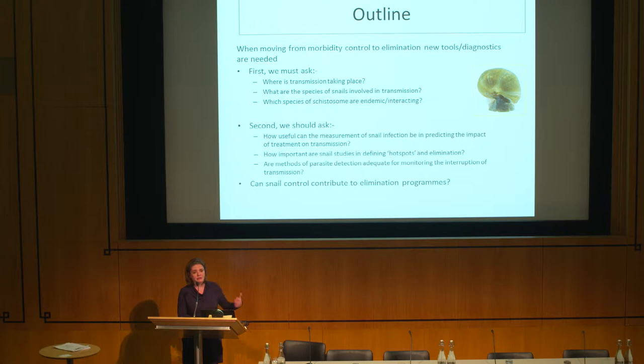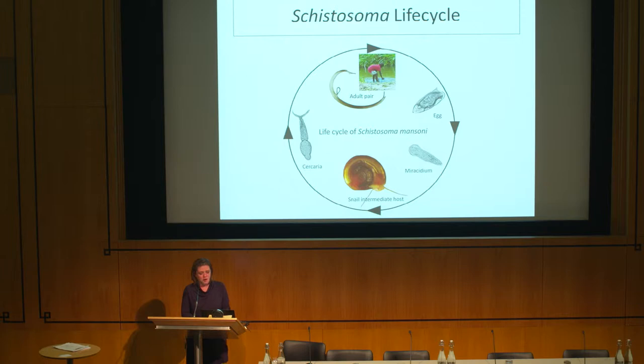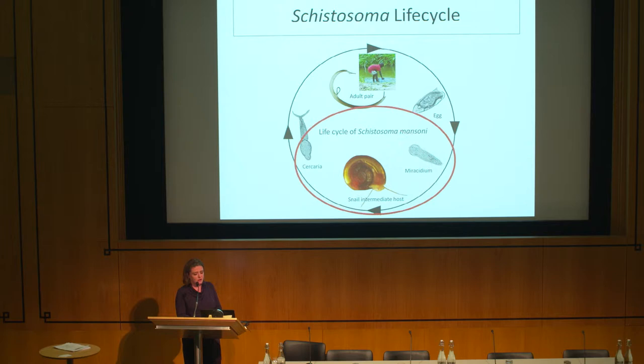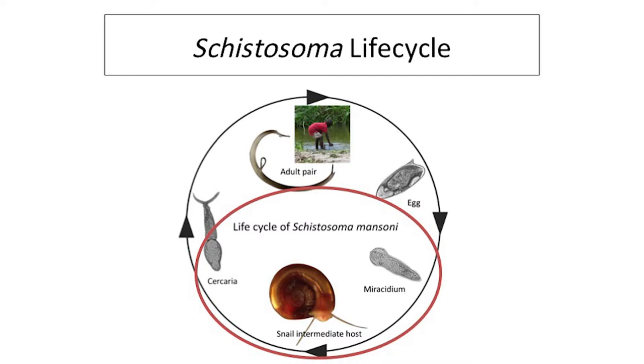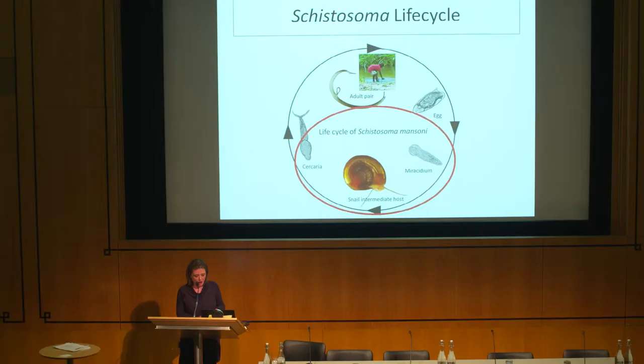To highlight the area of the life cycle I'm interested in: it's from the egg hatching — so miracidium — through to the production of cercariae. That's the period we define as the pre-patent period, which could be a four to six week period depending on the species of schistosome and the species of snail, along with other environmental factors such as temperature.